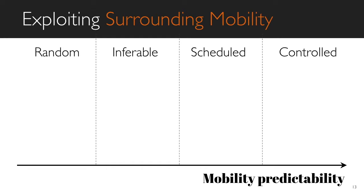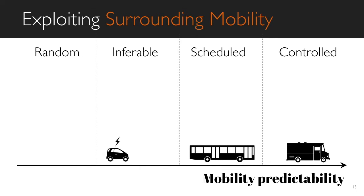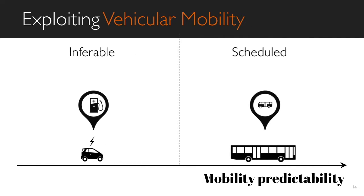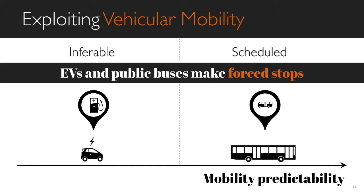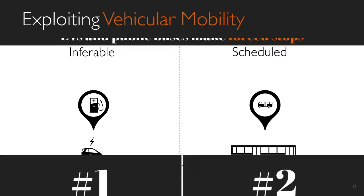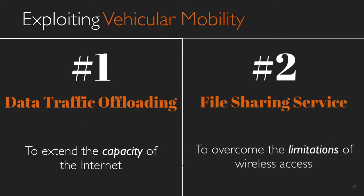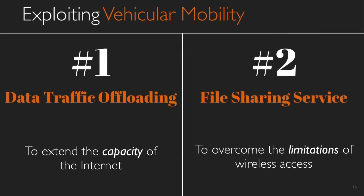Then we have the scheduled mobility of buses operated in cities. A third class of mobility is that of private cars, which can be inferred when considering electric vehicles. A last class is the random mobility of entities such as whales. In my work, I have focused on the mobility of electric vehicles and public buses because of the stops they are forced to make. What is more, these stops are made at specific locations such as charging stations or bus stops. In the first piece of work, I exploit the mobility of EVs to offload large data transfers from the internet, at the scale of France.